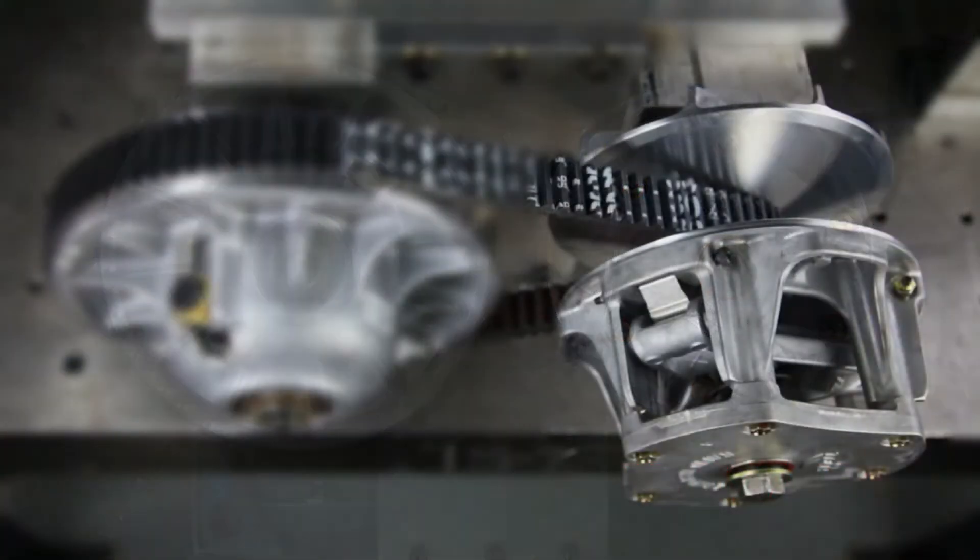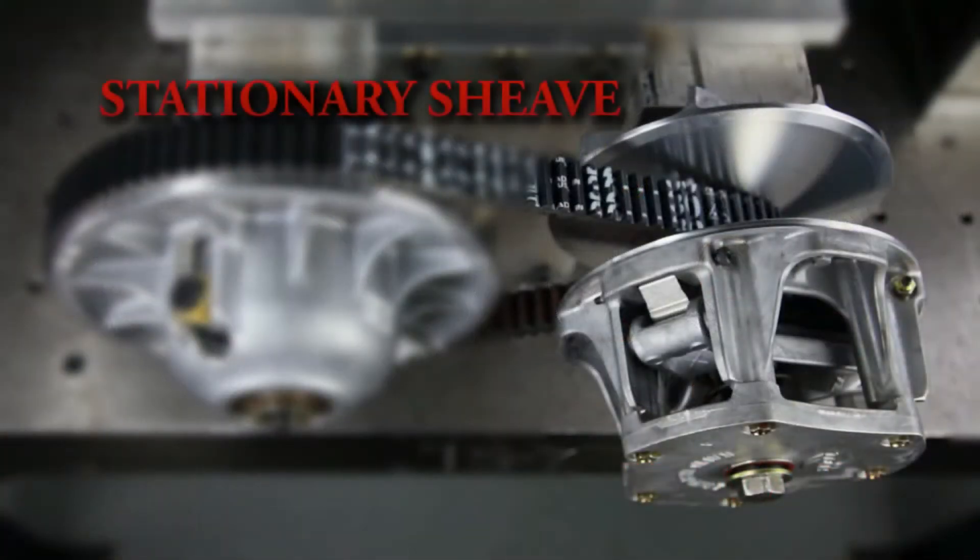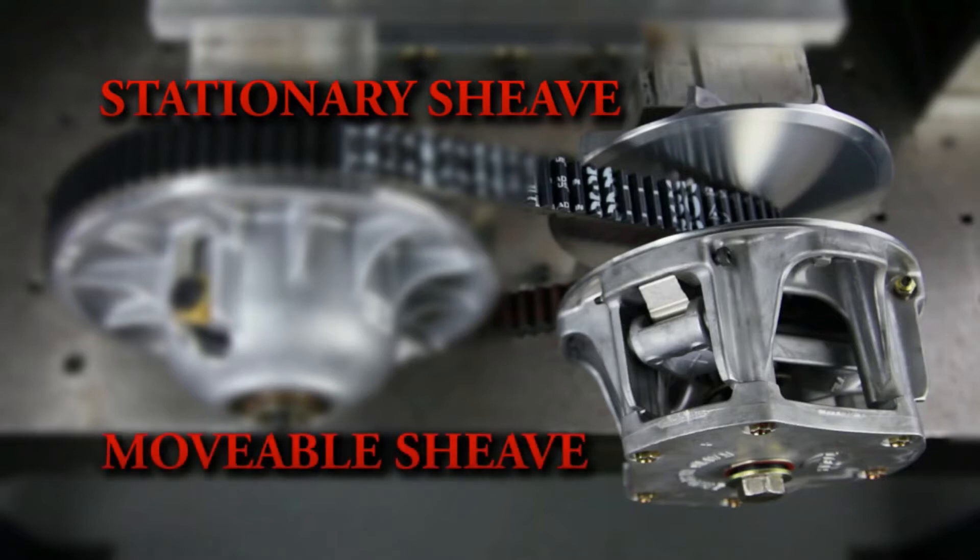The primary clutch has two sheave faces: the stationary sheave which is attached to the engine crankshaft, and the movable sheave which moves in and out to engage the belt.